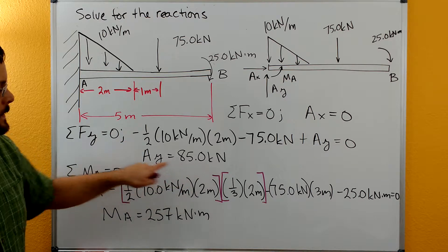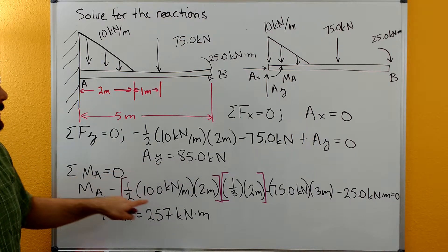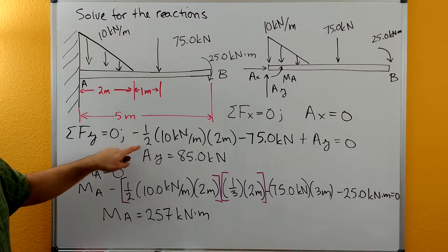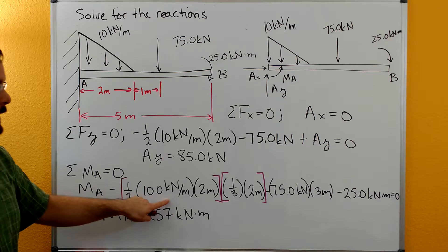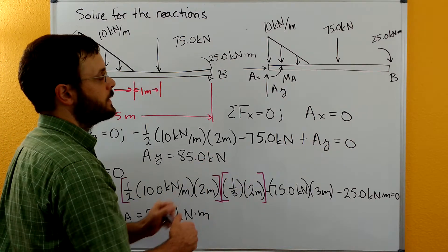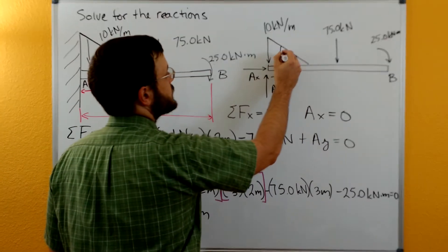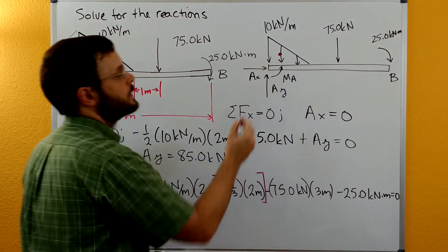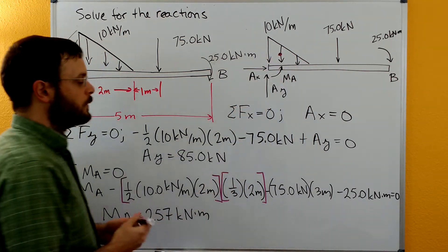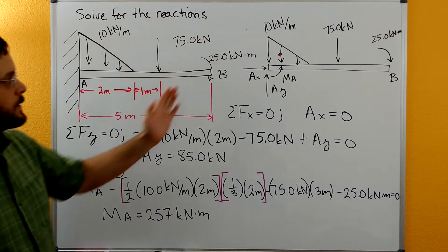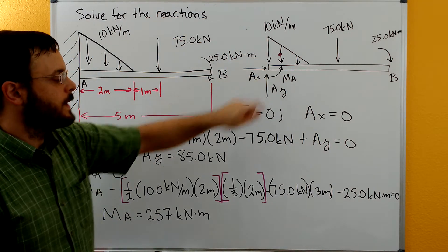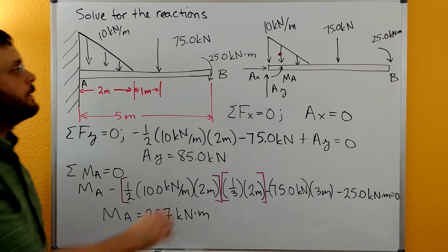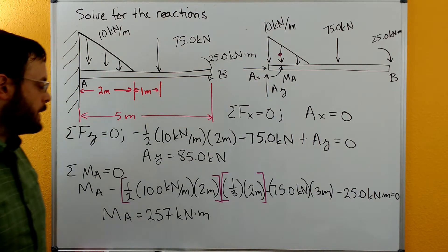And then we have our distributed load. Remember, all of this stuff here is really just the force - one-half the base times the height of our distributed load. Now we need to multiply it by the distance. Remember that the centroid of the triangle is going to be one-third over from the side, and so we're going to do one-third times the two meters, and that'll give us our distance back to A. That moment's going to be negative about point A.